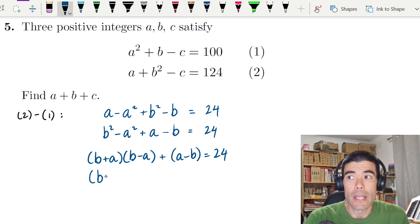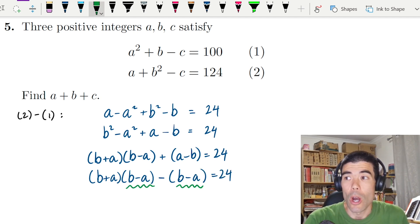We have a minus b in that second term, but if we take out a negative, that will be b minus a. And then we'll have a common bracket between those two terms. So that common bracket of b minus a, we can take that out the front and we'll have b minus a. And the second bracket will be b plus a minus 1.